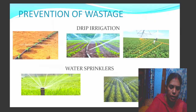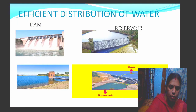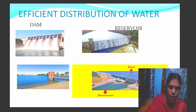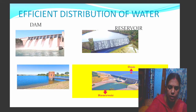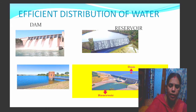The second method is efficient distribution of water. Water bodies from surplus water regions can be linked to those regions which face water scarcity. Linking rivers can help control floods and utilize rainwater. Dams and other water reservoirs should be constructed in a planned manner to ensure regular water supply.